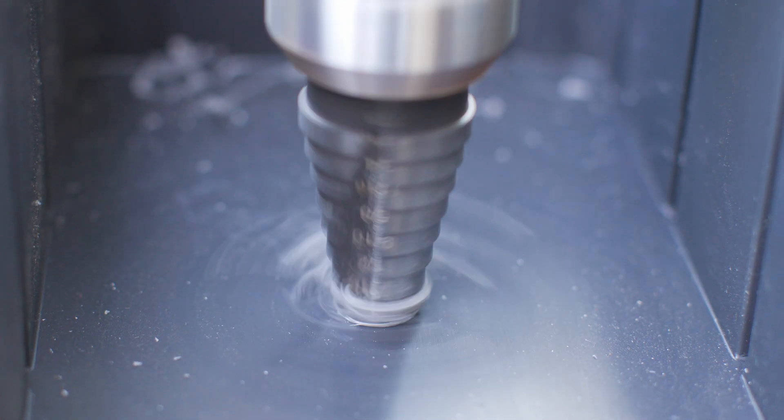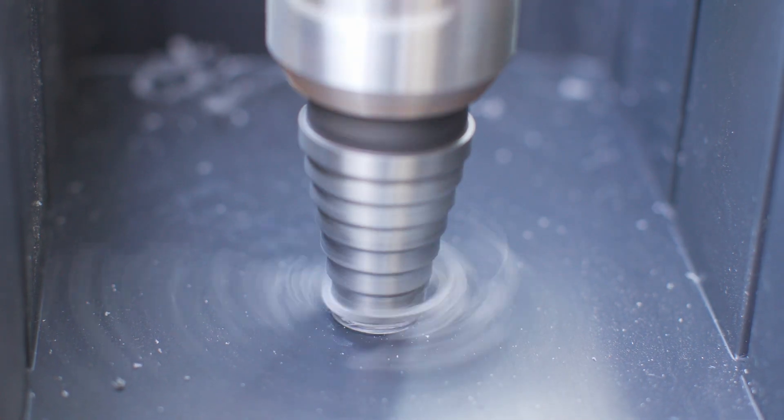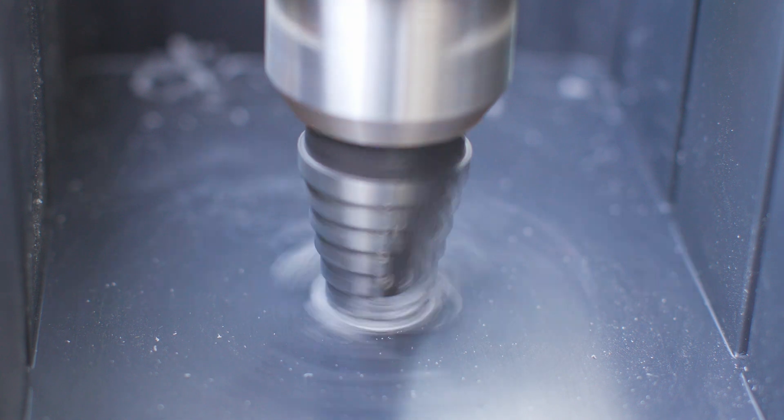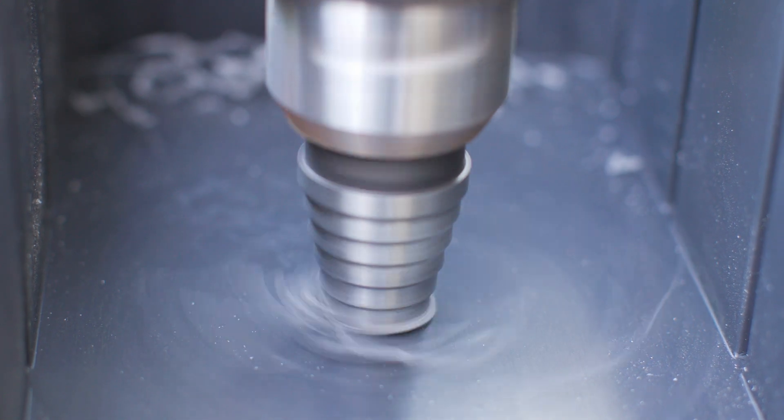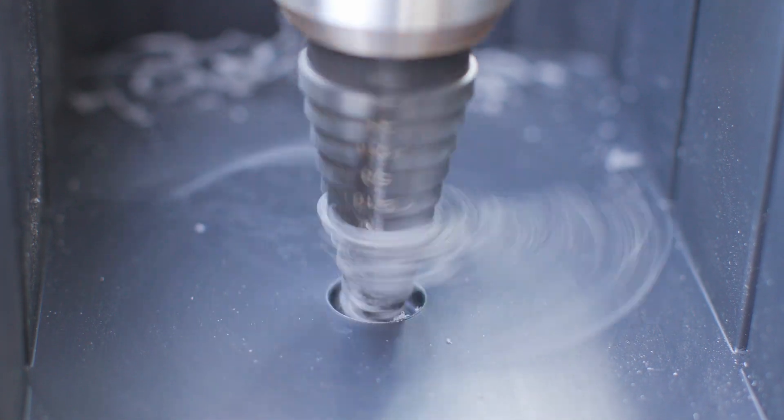And what that does is partially bevel the edge of the hole so you can wind up with a little taper. That makes the hole look nicer. It also helps you recess any fastener that you're putting through it. Obviously not meant for every application, but it's kind of a useful element that the step bit provides, something I've found convenient over the years.